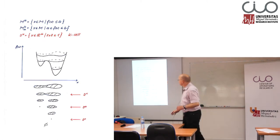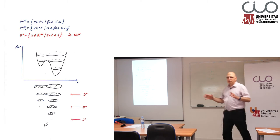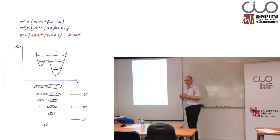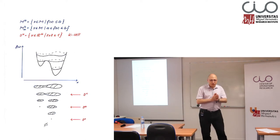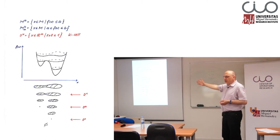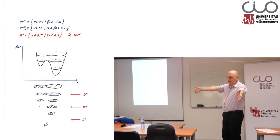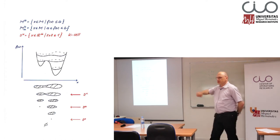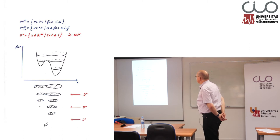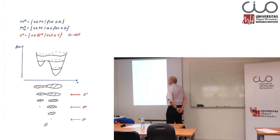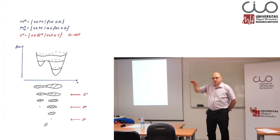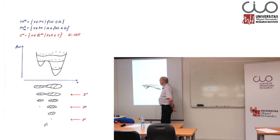Morse theory was the first context where this kind of change in topological structure was investigated. Morse theory is when we only look at one function F — only an objective function, if you want to see it in the context of optimization. Morse theory was independently developed from optimization. We have one function F and we ask: what happens if we look at the level sets of this function and the level is varying?